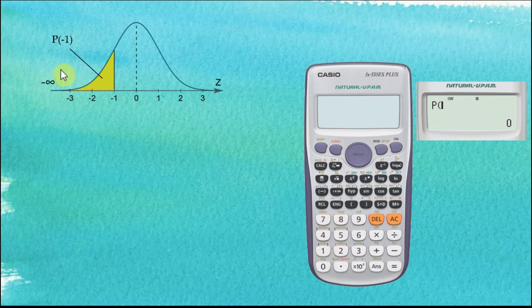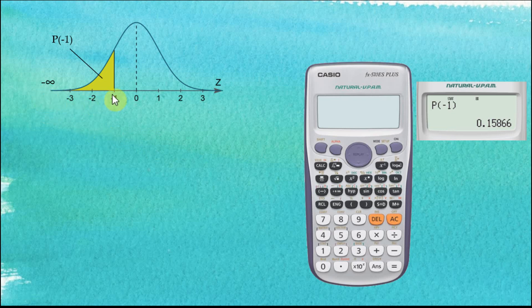So if we would like to find the area from negative infinity to negative 1, we key in P(−1). We already have the bracket, so we key in negative 1, close bracket, equal. The area from negative infinity to negative 1 is equal to 0.15866.